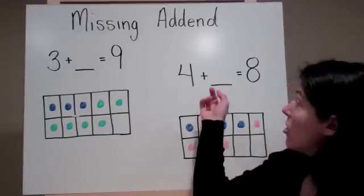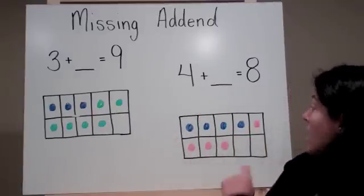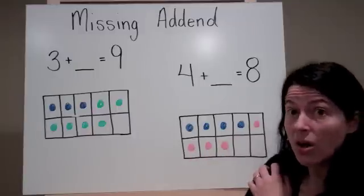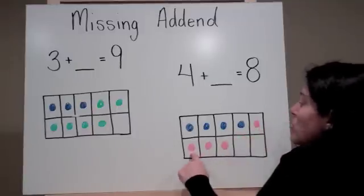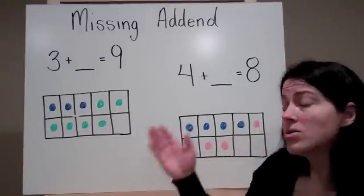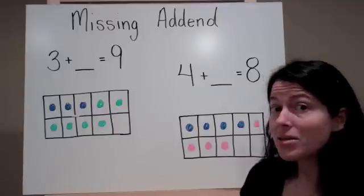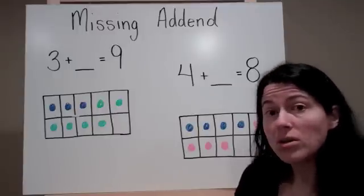Now to find out what the missing addend is, I count what I filled in after what I already knew. 1, 2, 3, 4. So now I know that the missing addend is 4. 4 plus 4 equals 8.